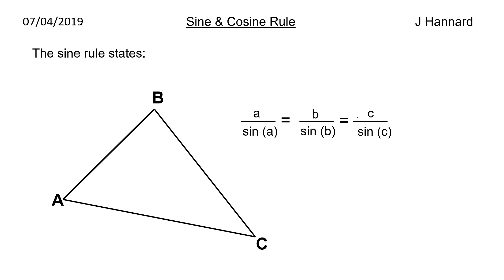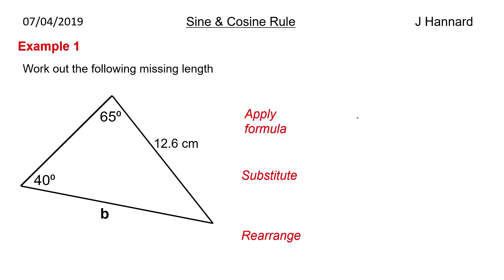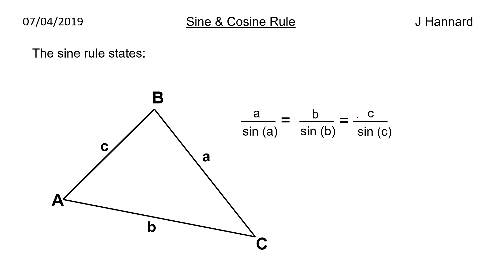So the sine rule states that a over sine a is equal to b over sine b and c over sine c. So we stick our a there, we stick our b there, we stick our c there. So that is exactly what it means. This little c over here divided by the sine of the big C is equal to little a over sine a which is also equal to b over sine b.